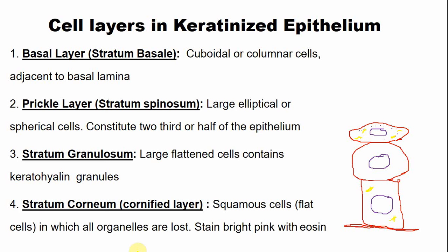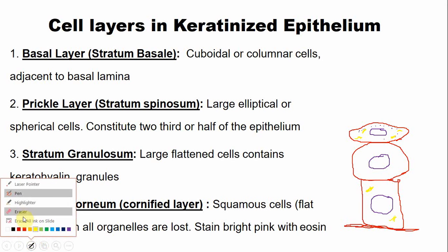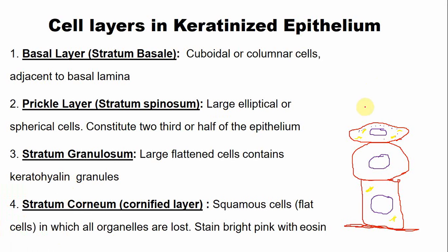The last cell layer present superficially is the stratum corneum, also known as the cornified layer. This cornified layer is also a few cell layers thick.